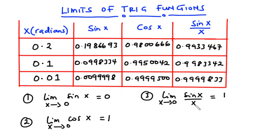The third equation: the limit of sine x over x as x approaches 0 is equal to 1. When x is 0.2, sine x over x is 0.9933467. As x reduces to 0.1, it is 0.9983342. And as x reduces to 0.01, sine x over x is 0.9999833. So as x approaches 0, sine x over x approaches 1. Based on these three equations, we will solve some examples on finding the limit of trig functions.